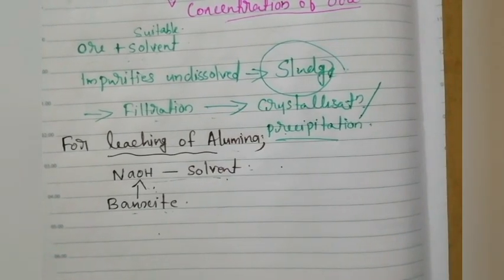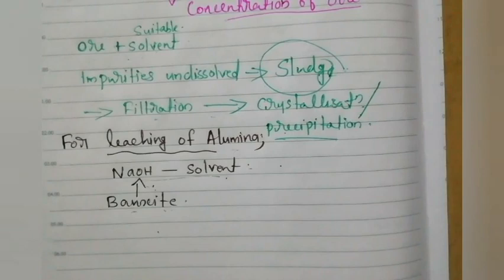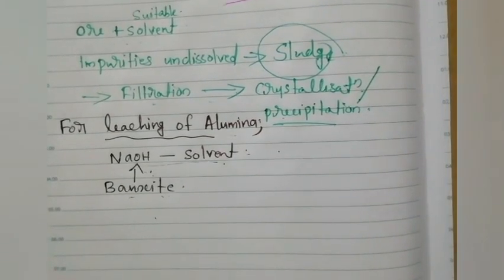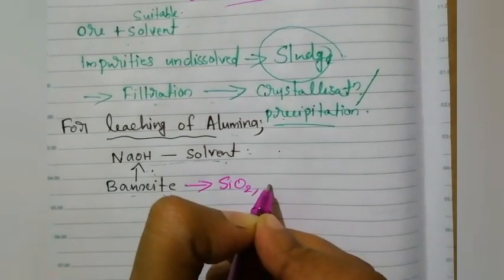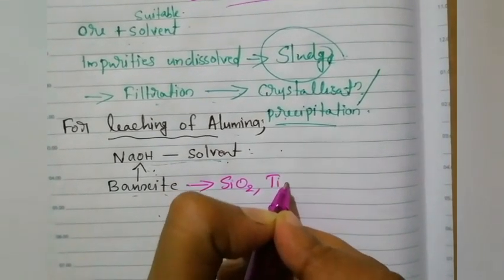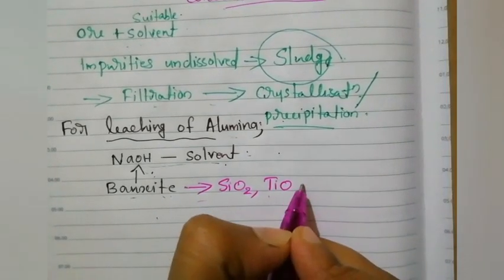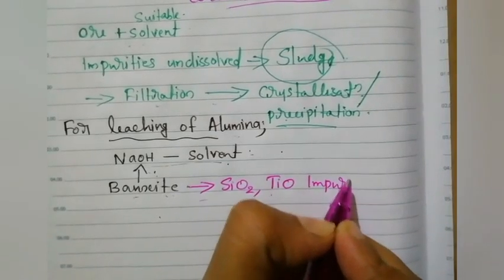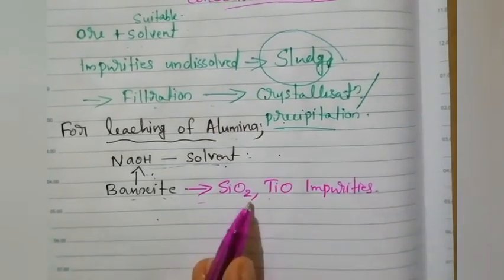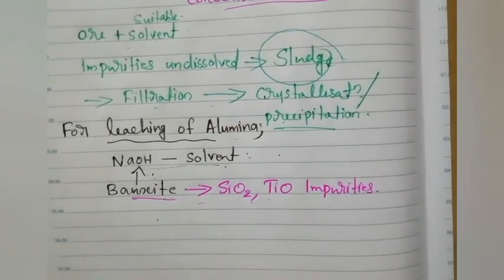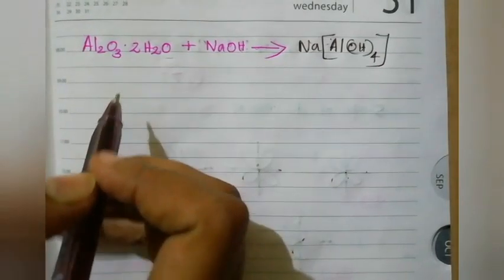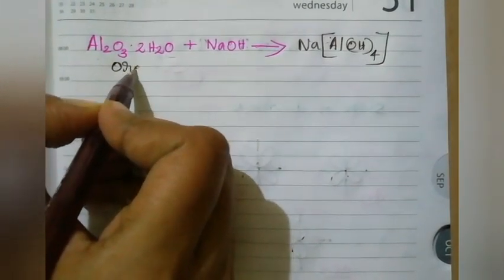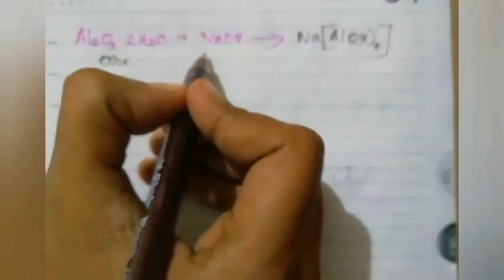Bauxite is the principal ore of aluminum — bauxite is the major source of aluminum. But bauxite is contaminated with some other impurities. The main impurities are SiO2 (silica) and titanium oxide. Silica and titanium oxide are the main impurities present in bauxite along with alumina. Bauxite is represented as Al2O3·2H2O — that is the ore particle.